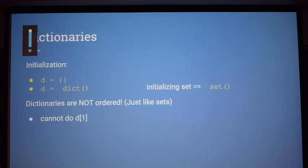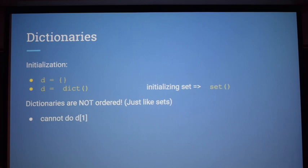The way you initialize dictionaries — there are a couple of ways. First, you can do it with empty squiggly braces. One thing to note: an empty dictionary and an empty set look the same if you print them, but they're not initialized the same. To initialize a set, you use set() with brackets. You can also initialize dictionaries with dict() in brackets.